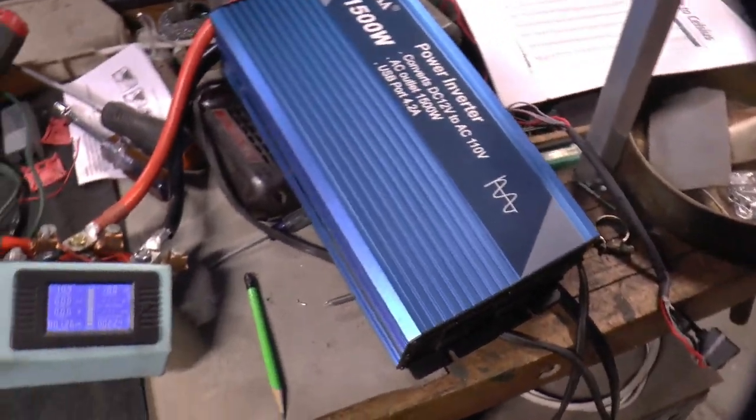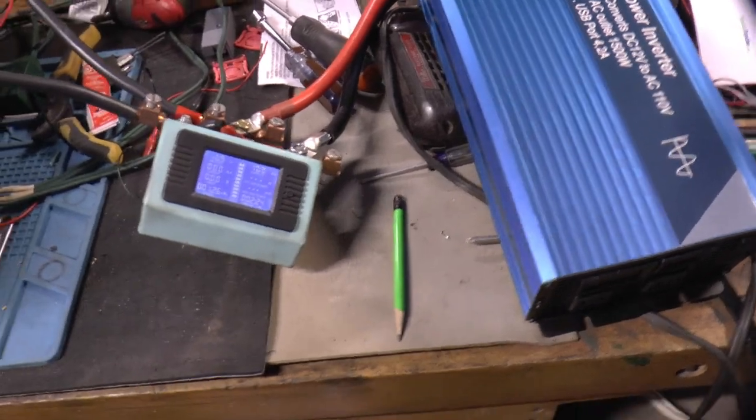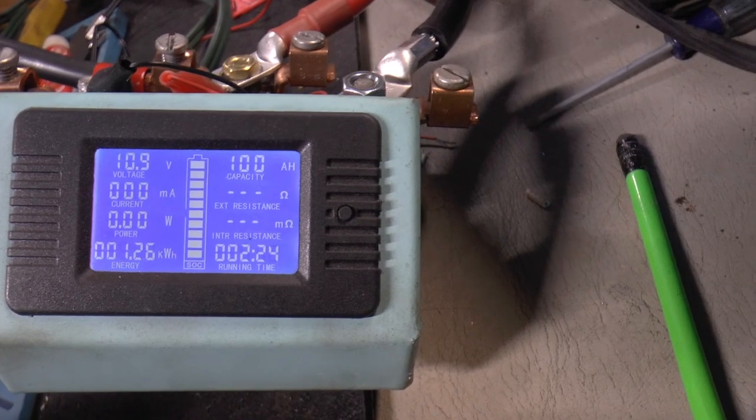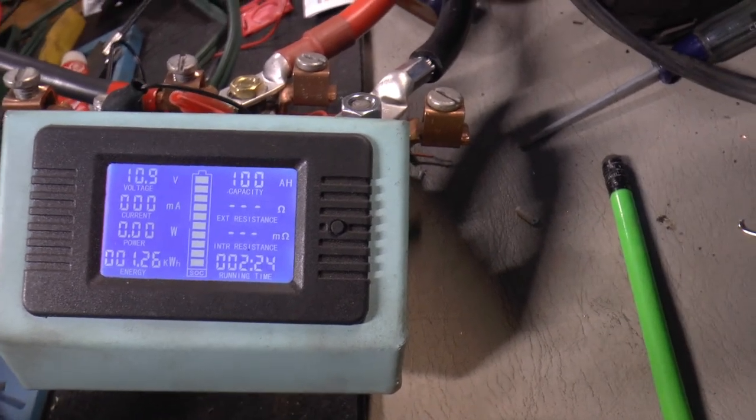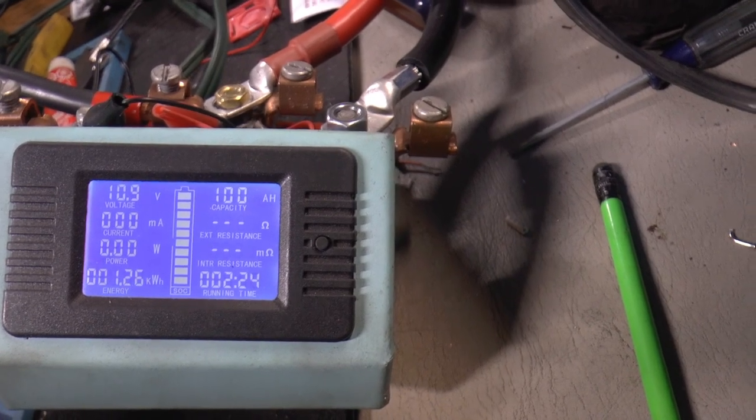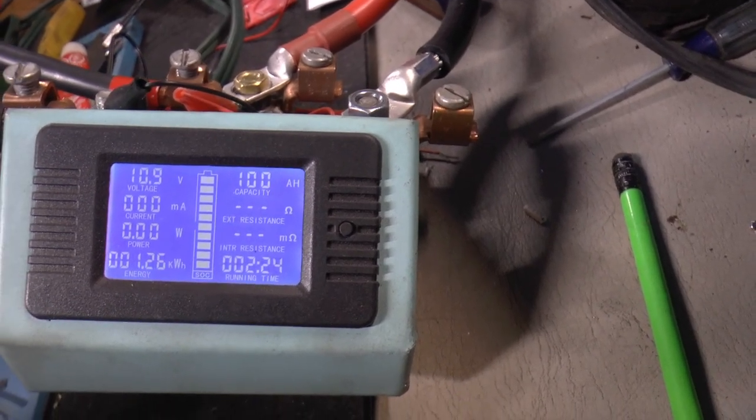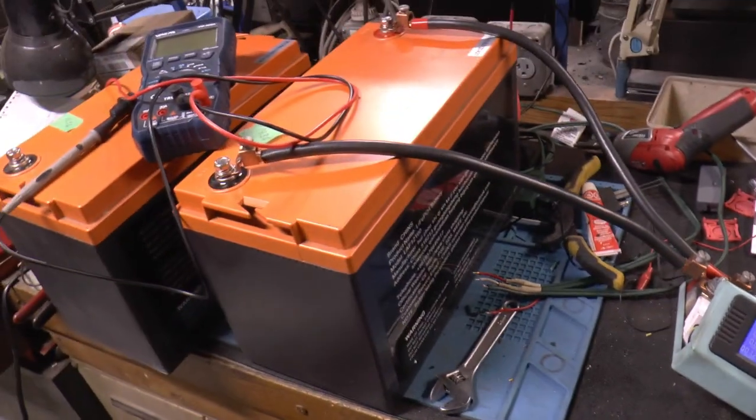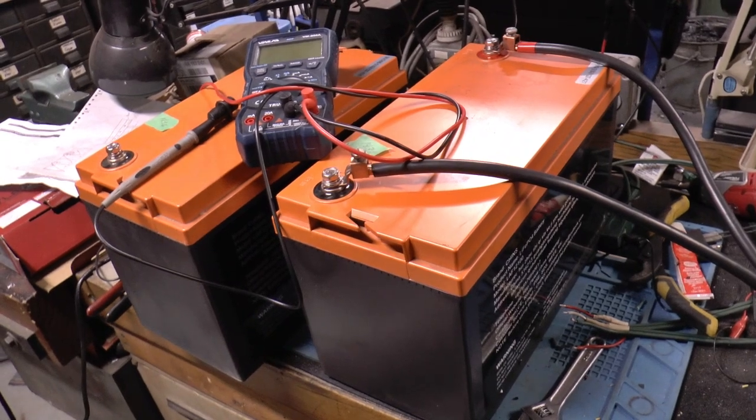It started beeping at 10.5 volts and shut off at 10.5. So we made 100 amp hours and 1260 watt hours. For a year old, I'm happy. That's number one. We got number two to test yet, so that's next.